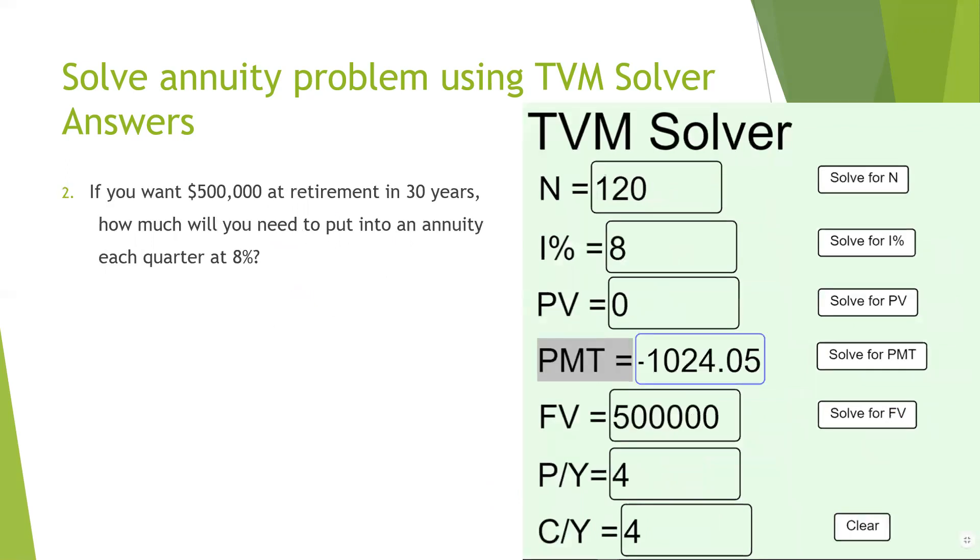The second problem is one where we know how much we want. You've talked to a financial advisor and you know that you need half a million at retirement to be in the position you want to be. You have 30 years until you retire, and you want to put money into an annuity every quarter. So that means you're going to put four times a year a certain amount of money away every quarter.